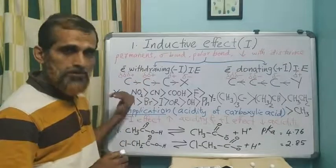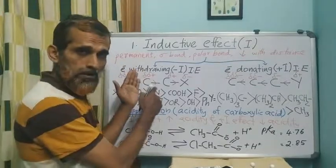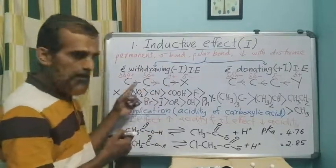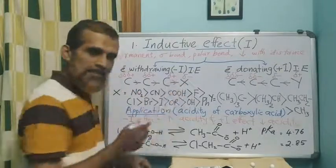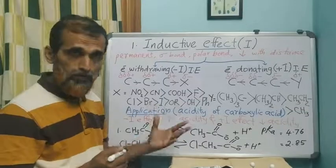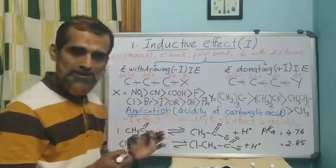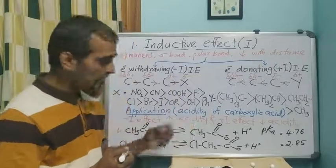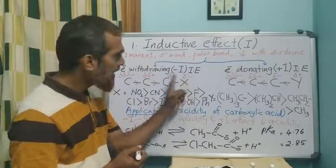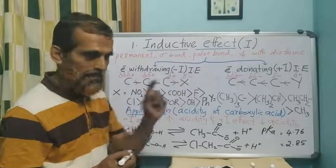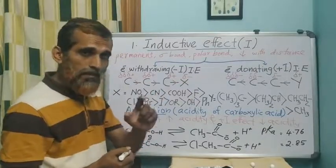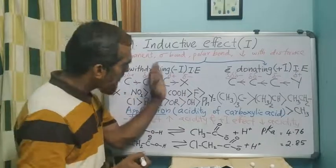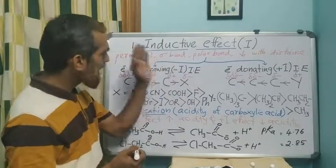Consider a C–X bond where X is a more electronegative atom or group. X will withdraw the sigma electrons of the covalent bond towards itself, acquiring a slight negative charge (δ–), while the carbon acquires an equal and opposite charge (δ+). This bond has become polar, and this polarity will induce polarity in the neighboring bonds.